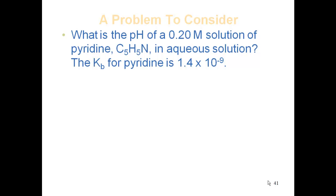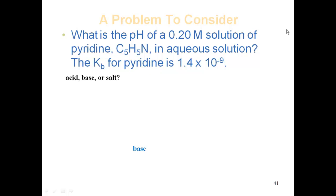The first question we ask ourselves is: is this a single solute or is it a reaction? It's a single solute. Next question: is it an acid, a base, or a salt? Since the problem gives us the Kb of pyridine and we're talking about pyridine — the same substance — that is a clear indication that we're talking about a base here.